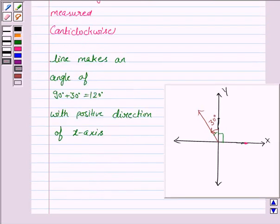We know that slope is tan theta. So the slope of the line is equal to tan 120 degrees, which equals tan of 180 minus 60 degrees.